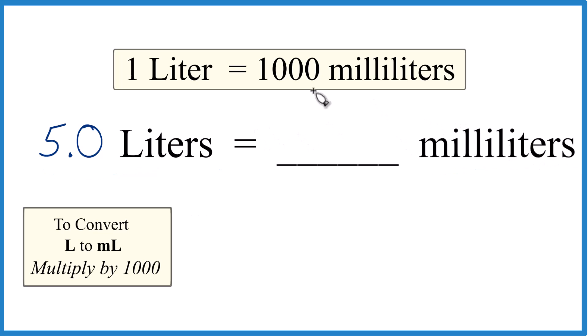To get 5 liters to milliliters, we know that 1 liter is equal to 1,000 milliliters. That's our conversion factor.